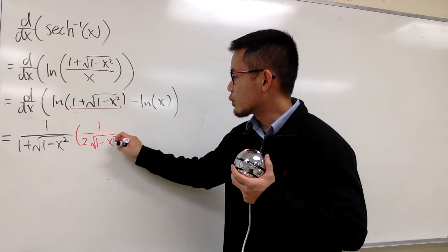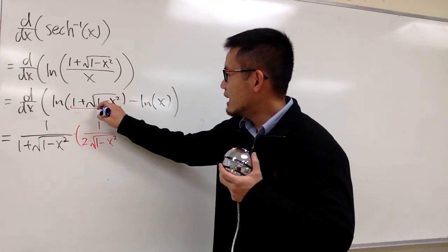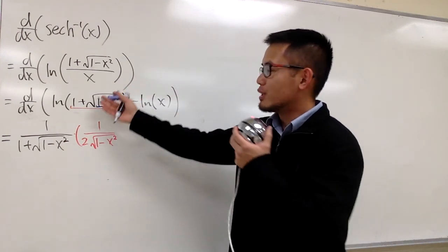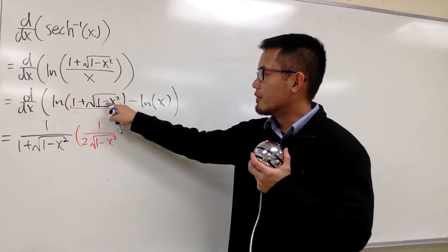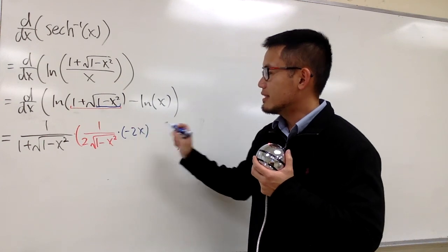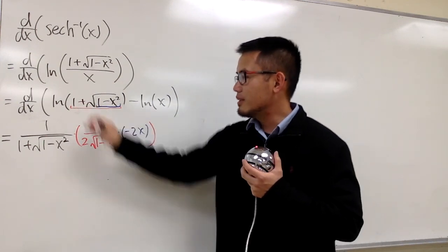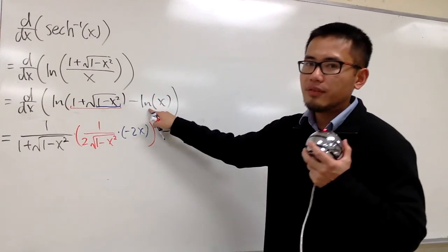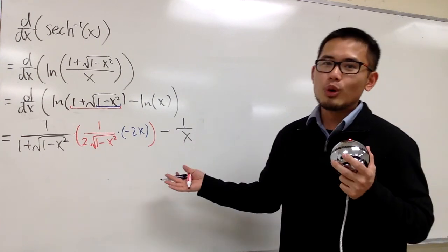So we have 1 minus x squared, and we have to do the chain rule one more time, because inside of this square root, the chain rule says we multiply by the derivative of the inside. Derivative of 1 is 0, and the derivative of negative x squared is negative 2x. This is the first part, and we minus the derivative of ln of x, which is just 1 over x. This is what we have at the moment.